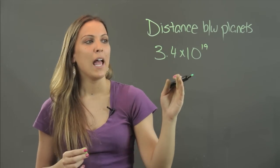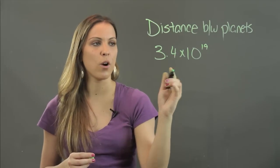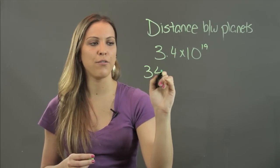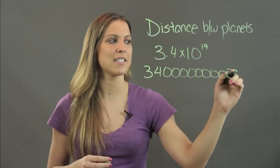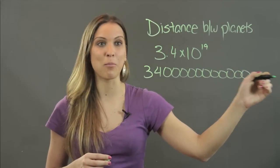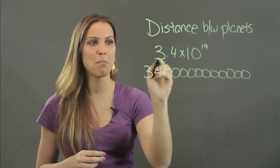If you had to write this out in standard form, that's going to be three four with 18 zeros following it: one, two, three, four, five, six, seven, eight, nine, ten, eleven... I can't even fit them all on this board. This shows you how it's much more convenient to write this number than this one, which is not even done at this point.